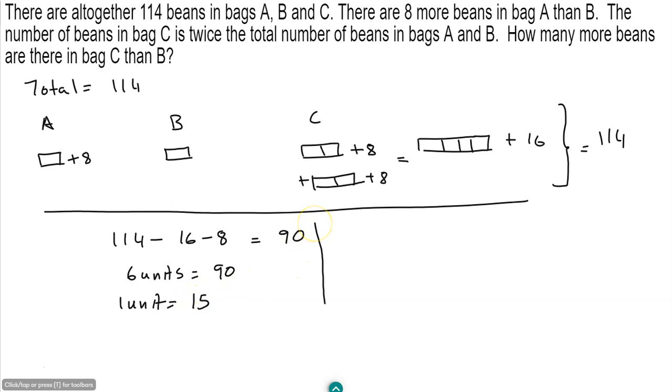We have this information. Now let's see what the question is asking us to find. They say how many more beans in bag C than in bag B. So let's see, in bag C, you have 4 times 15 plus 16, which is 76.